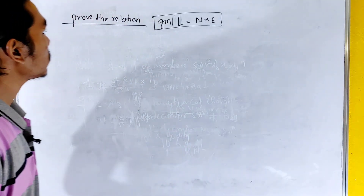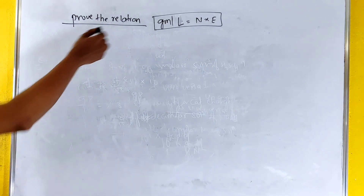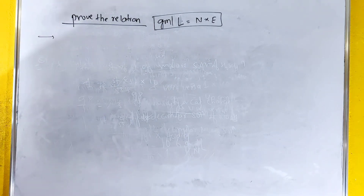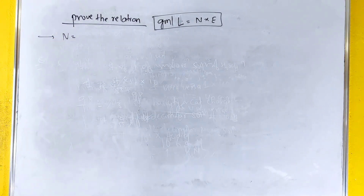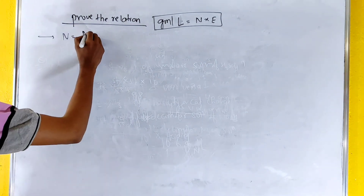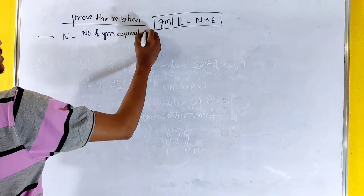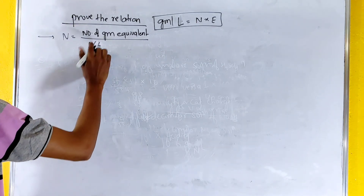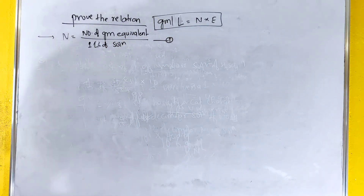Okay, I am going to prove the relation. First of all, what is normality? Normality is the number of gram equivalents divided by one liter of solution — equation one.